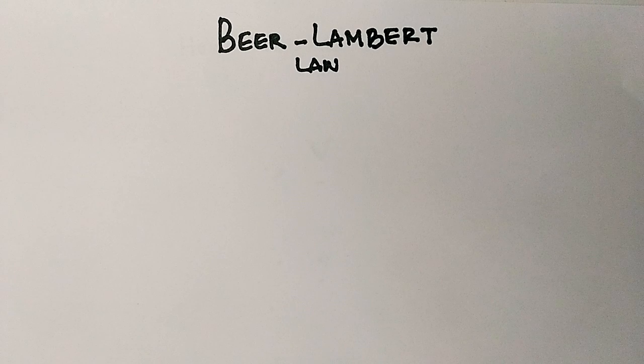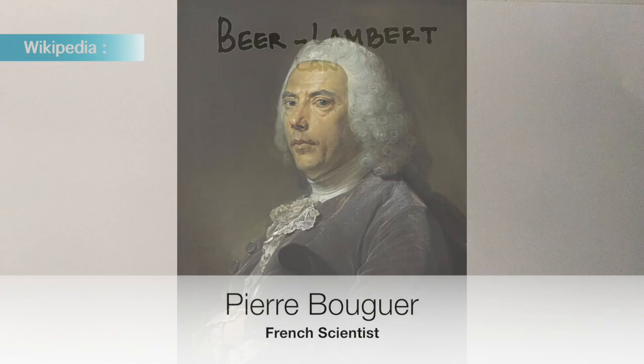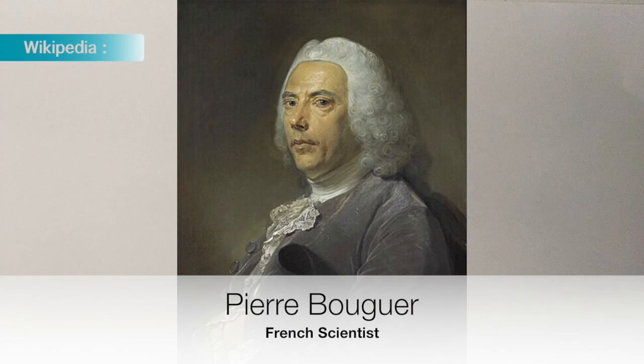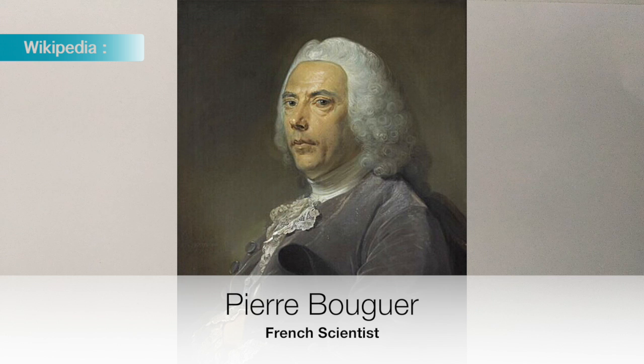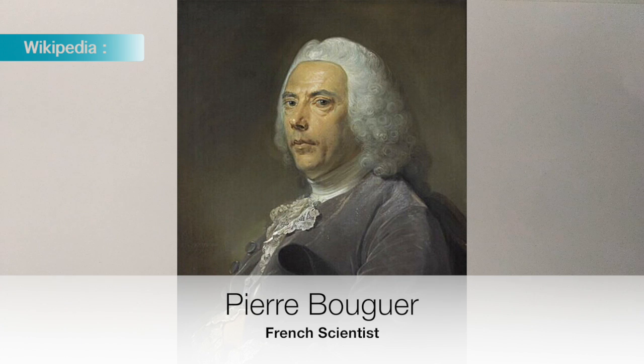It was P.A. Bouguer, the French mathematician, geophysicist, and astronomer who defined the quantity of light lost by passing through a given extent of the atmosphere and became the first known discoverer of what is now more commonly known as Beer-Lambert's law.